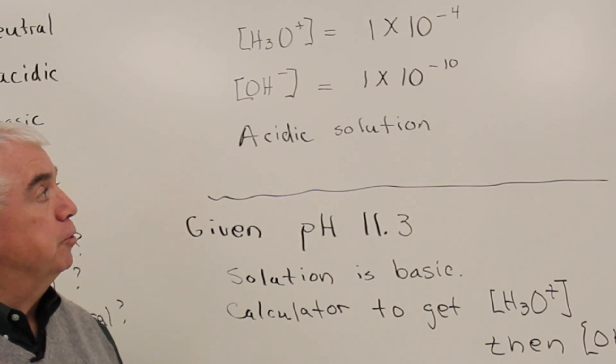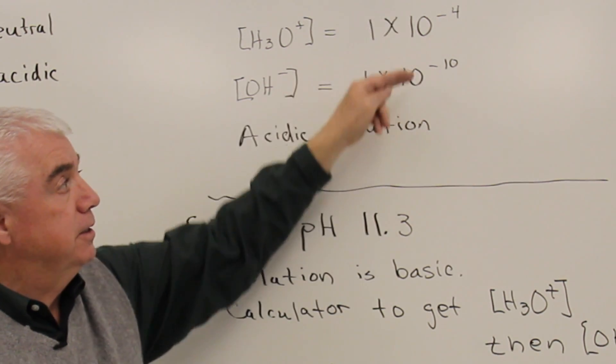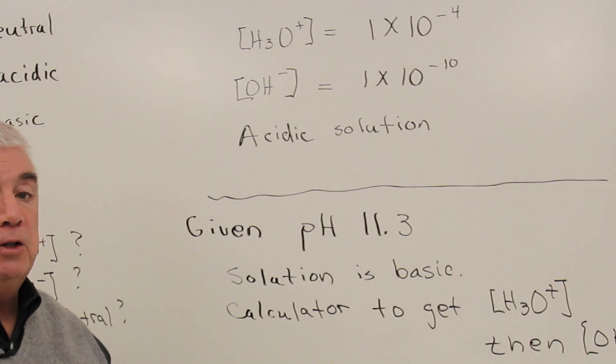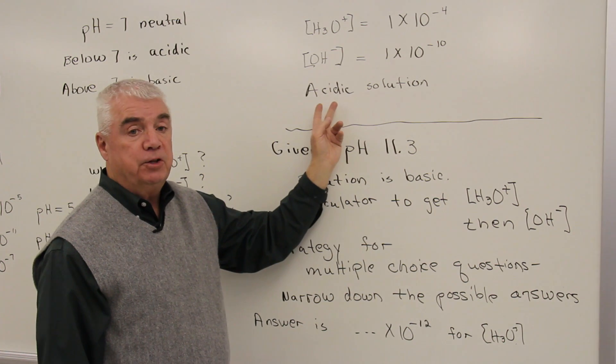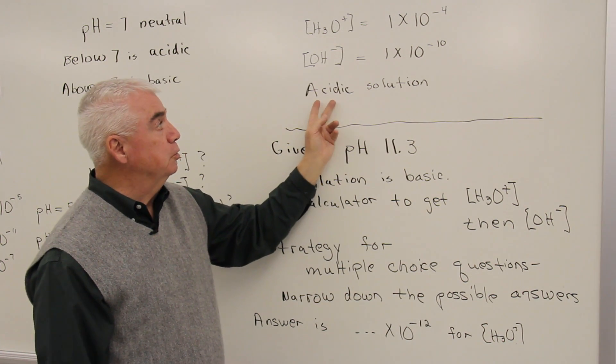The OH concentration must be 10 to the minus 10, so that the product of these two is 10 to the minus 14.